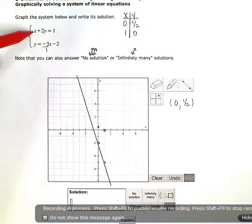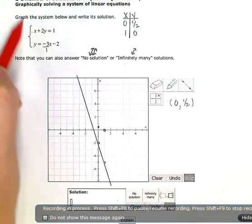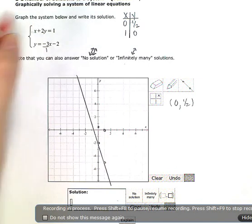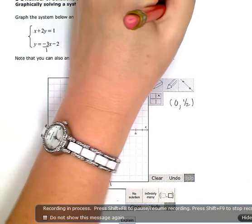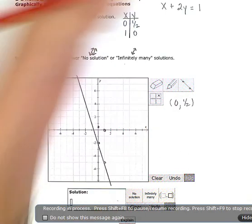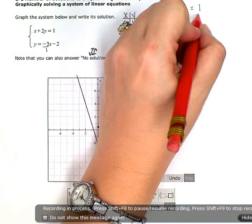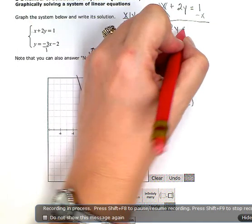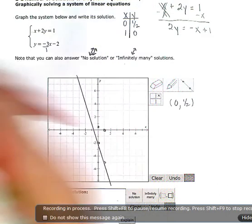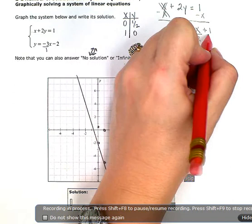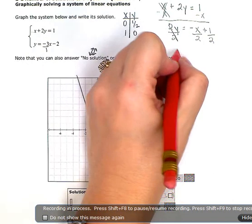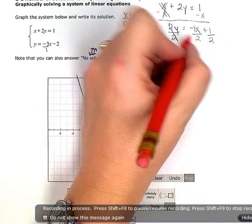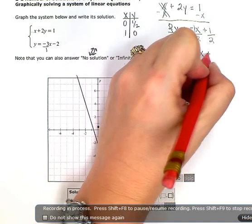The other way to do this, so if you're in the general ed classes, the way to do this is to just rearrange it into y equals form. So x plus 2y equals 1. We're going to subtract x from both sides. And I'm left with 2y equals negative x plus 1. And then I'm going to divide everything by 2. So y is equal to, remember there's kind of a hidden or an implied 1 right there in front of the x. So this is negative 1 half x plus 1 half.